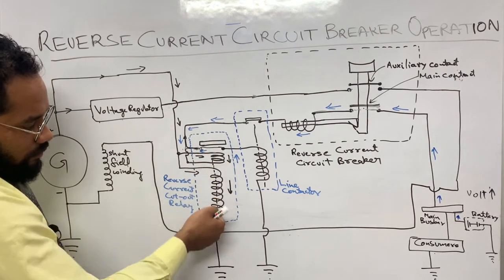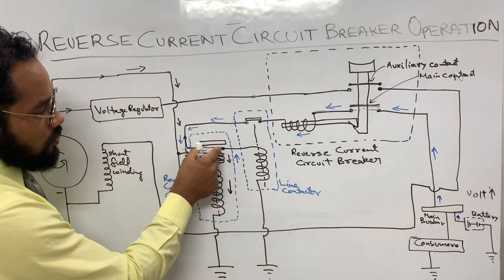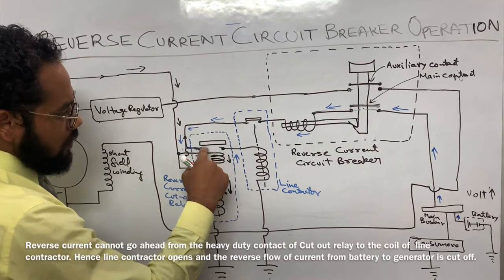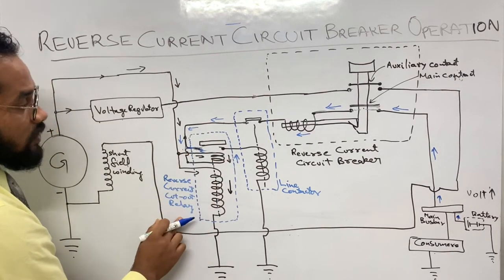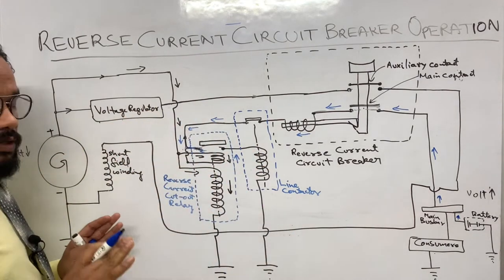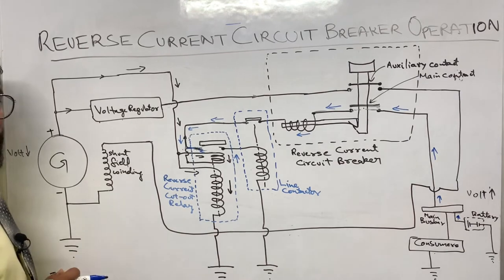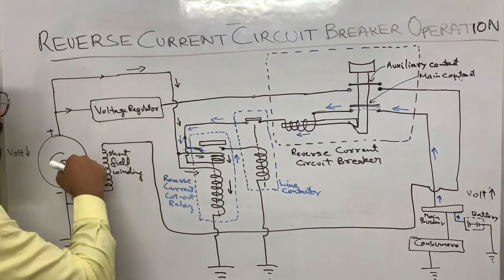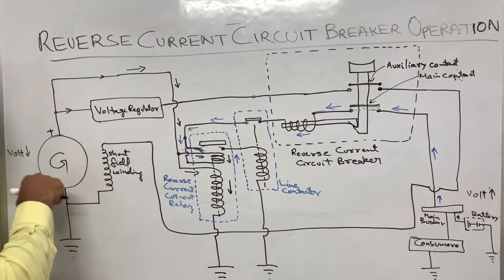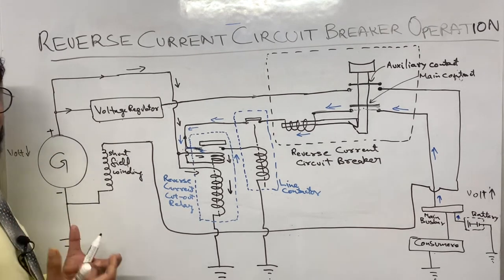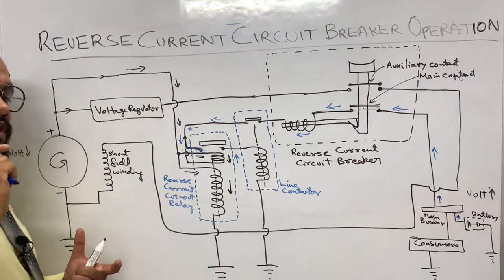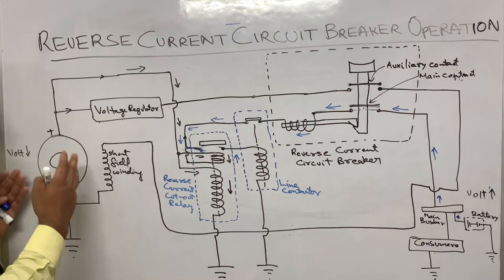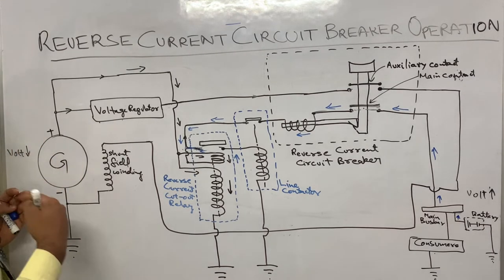Because the core gets neutralized, the contact of the reverse current cutout relay will open. When this contact opens, the reverse current cannot go ahead — the generator is disconnected from the battery. This prevents the motoring effect on the generator. If the contact did not open, the battery current — the reverse current — would go to the generator and cause it to behave like a motor, which would cause the generator to demagnetize.